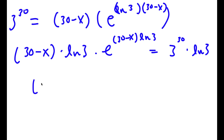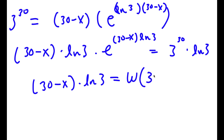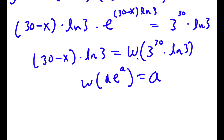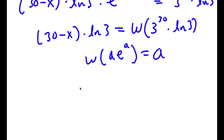The W Lambert function is defined so that W(a times e to the power of a) equals a. I need to apply the W Lambert function to 3 to the power of 30 times ln 3, but first I need to put the right-hand side into the form a times e to the power of a.